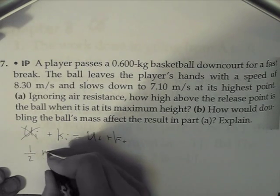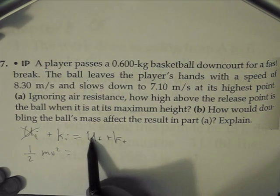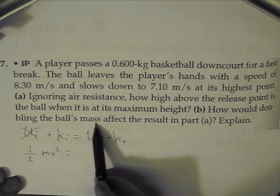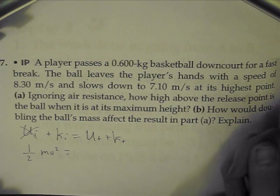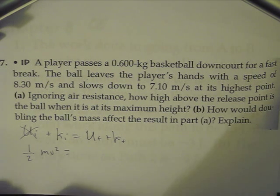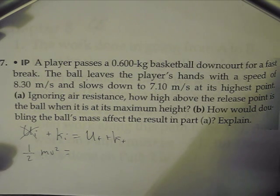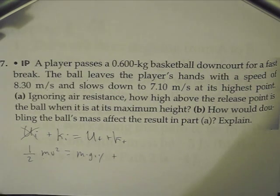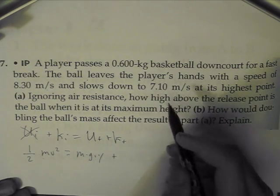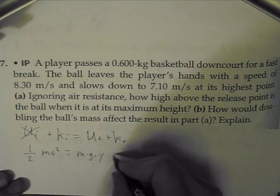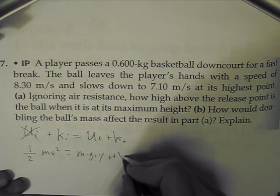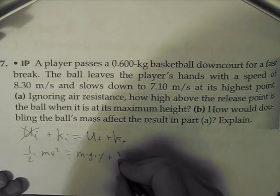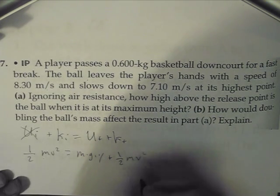So let's write that down. So one-half mv squared equals, and then do we have potential energy? Yeah, do we have potential energy at the highest point, at the end? Well yeah, because it's got a height. We don't know the height yet, we're going to solve for it, but it has a height, it's not zero. So it's going to be mgy plus, and up there does it have kinetic energy? Yes, because it's moving at 7.1 meters per second, so it's not at rest. So plus one-half mass times velocity squared.